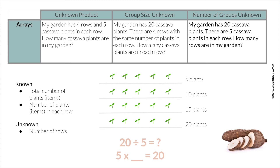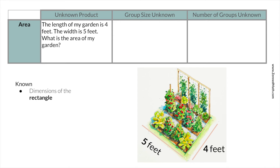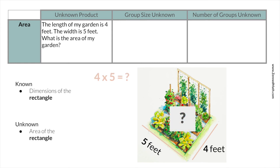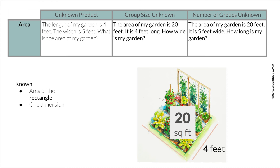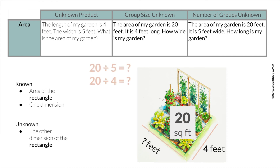Let's dig into area. For area: the length of my garden is 4 feet, the width is 5 feet — what is the area of my garden? What's known is the dimensions, and the unknown is the area — how many square feet is this? The next two area word problem types are pretty much the same: what's known in both is the total area — 20 square feet — and we also know one dimension, either the length or the width. The unknown is the other dimension. So when it comes to area, it means we know one dimension but not the other.